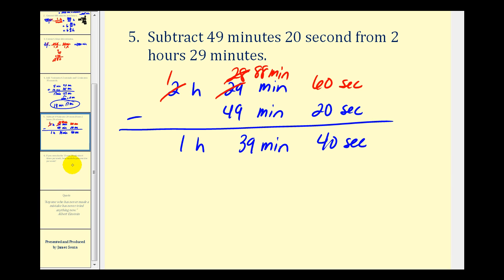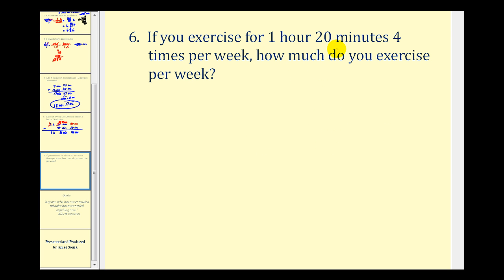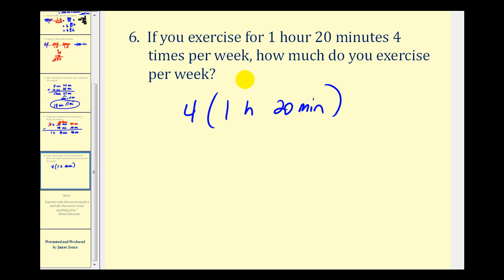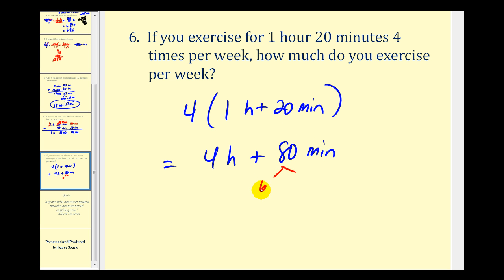Let's look at one more example. If you exercise for one hour twenty minutes four times per week, how much do you exercise per week? This would be four times one hour twenty minutes, which is four hours plus four times twenty minutes, giving eighty minutes. Since there are sixty minutes in one hour, the sixty minutes gives an extra hour. Adding that to the four hours gives us five hours and twenty minutes.